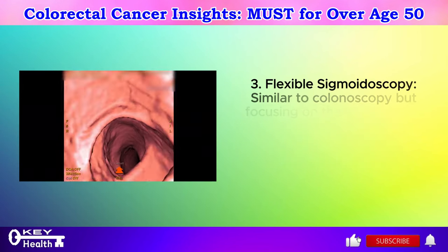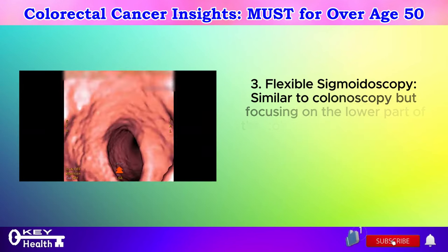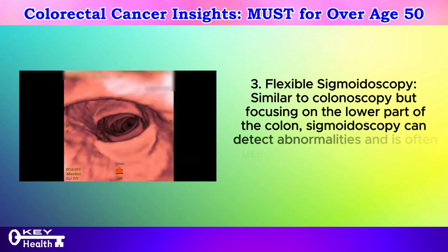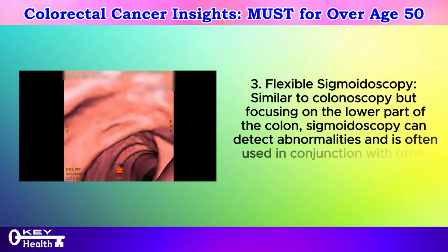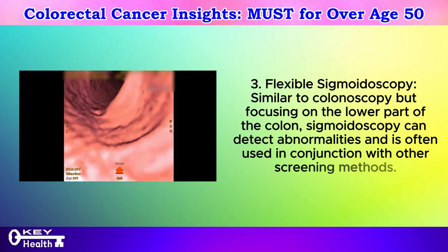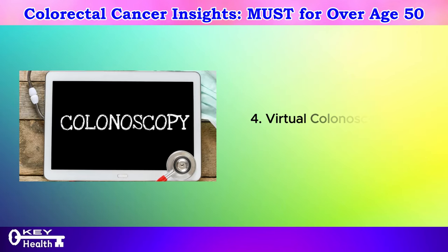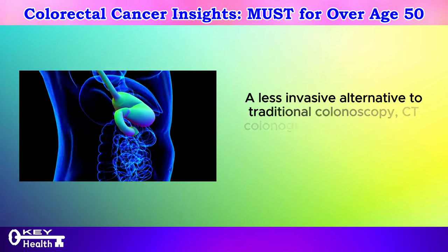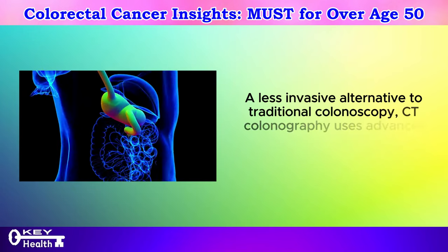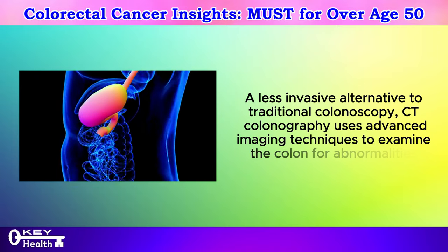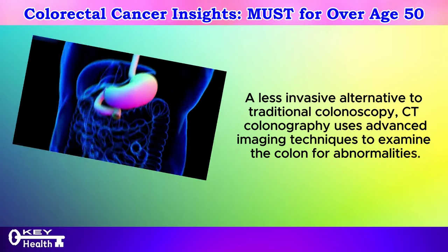Screening method 3: Flexible sigmoidoscopy — similar to colonoscopy but focusing on the lower part of the colon — can detect abnormalities and is often used in conjunction with other screening methods. Screening method 4: Virtual colonoscopy, or CT colonography — a less invasive alternative to traditional colonoscopy — uses advanced imaging techniques to examine the colon for abnormalities.